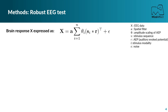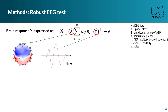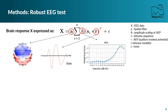The EEG data is expressed as the sum of the brain's responses to the stimulus modalities, weighted by a factor theta for each modality, and associated to a spatial pattern A, plus some noise. Our method aims to extract the auditory evoked potential R, its spatial pattern A, and the weighting factor theta for each modality of the auditory stimulus.